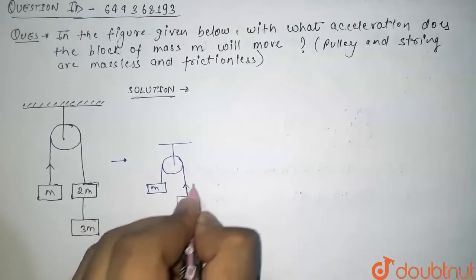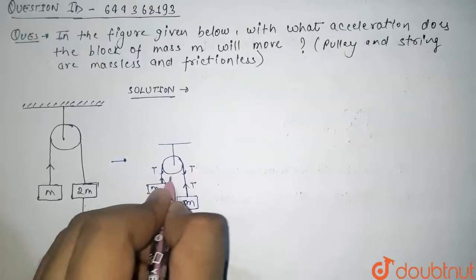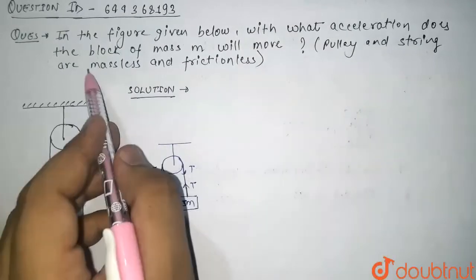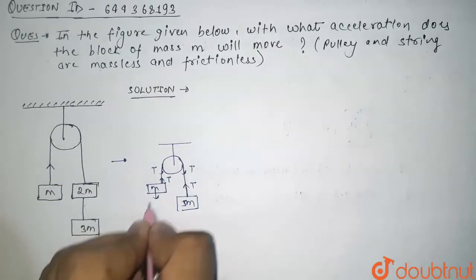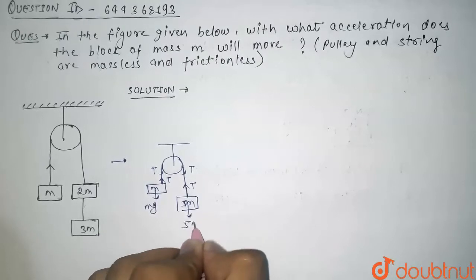Let us assume that the tension here is T. So this will be also T, this will be also T, and this will be also T, because the pulleys are given as massless and frictionless. Its weight will act downward, that is mg. Its weight will also act downward, that is 5mg.